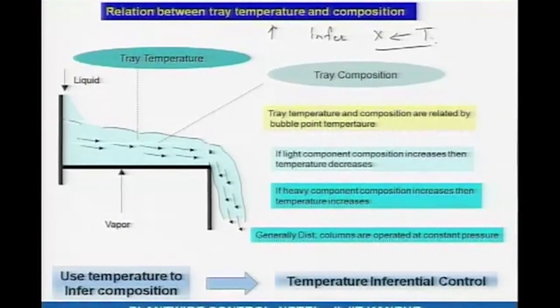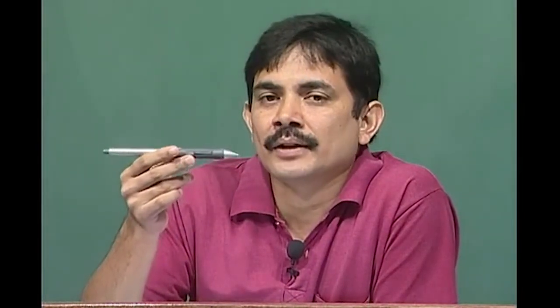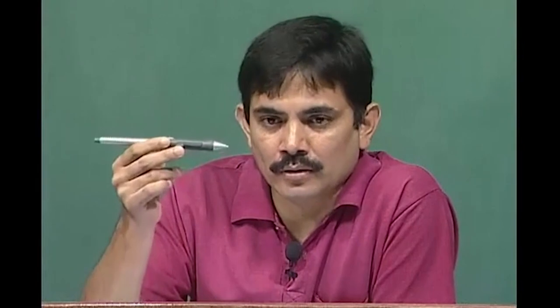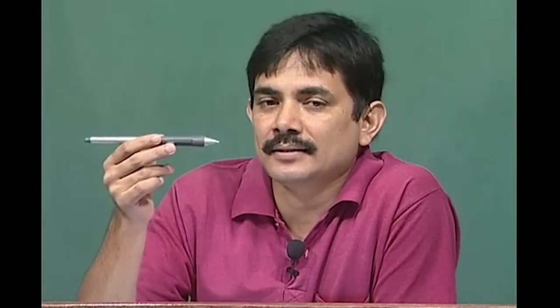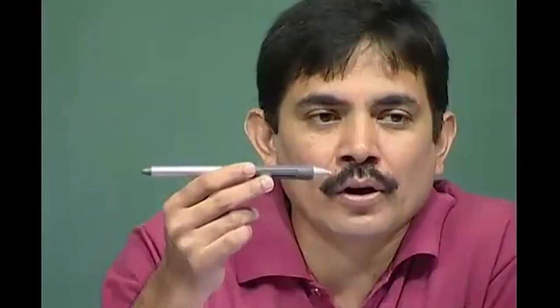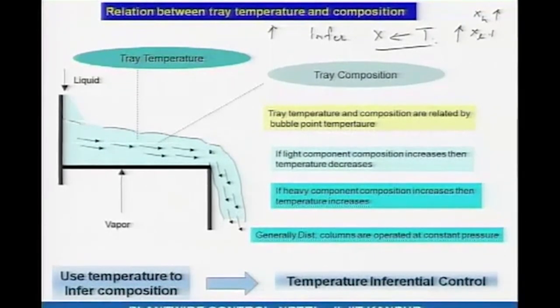Typically what happens is you take a sample, send it to your quality control lab, they do a detailed analysis, and by the time the shift is over — or towards the end of the shift — you get a reading for what was the quality of the sample taken in the morning. In the evening you get an answer; based on that the operator may adjust the reflux or reboil. For the 8 hours during the shift, the operator was running the column essentially blind.